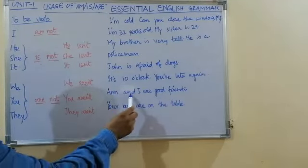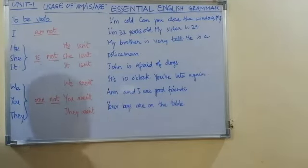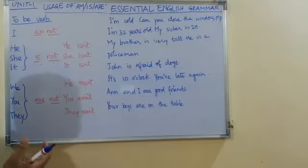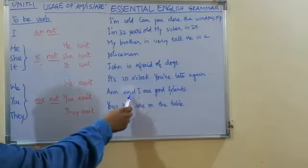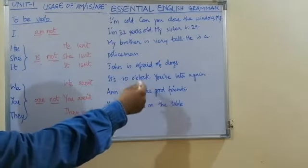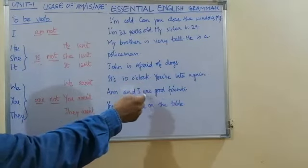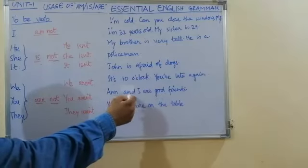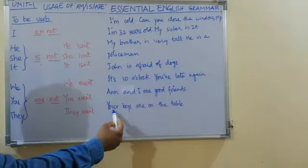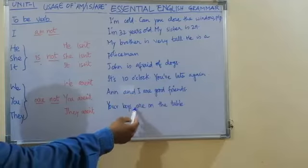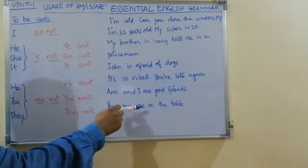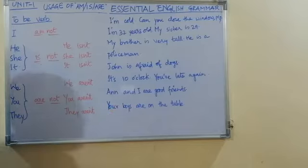Here there are two subjects. When two nouns are connected with 'and', we use the plural form of the verb, so it will be 'are' — Ann and I are. Your keys are on the table. 'Keys' is plural, so we are using 'are'.